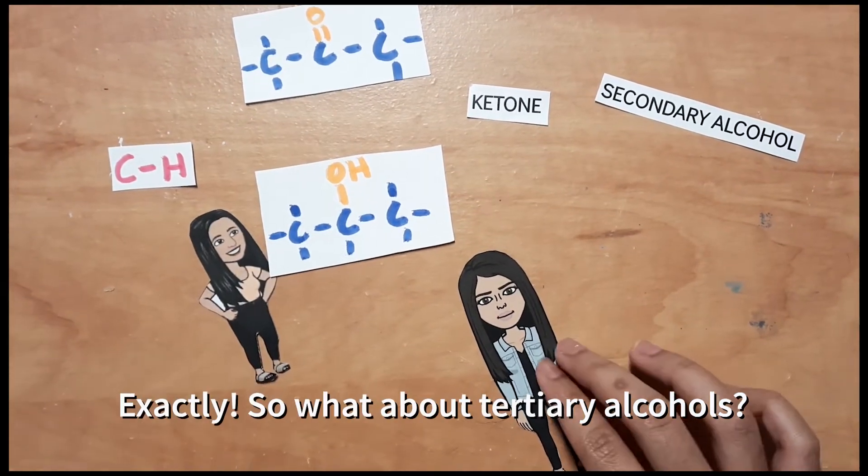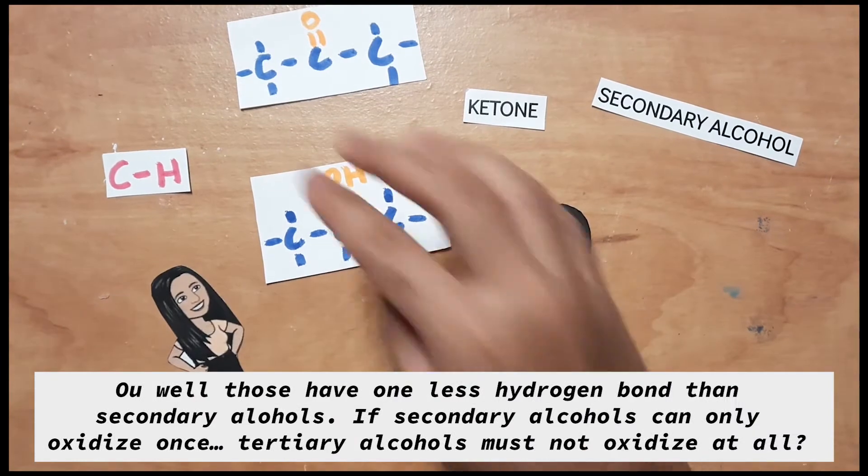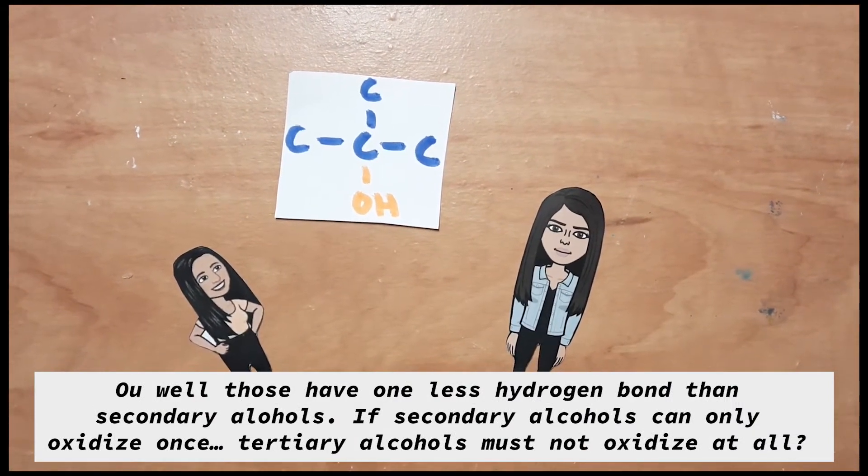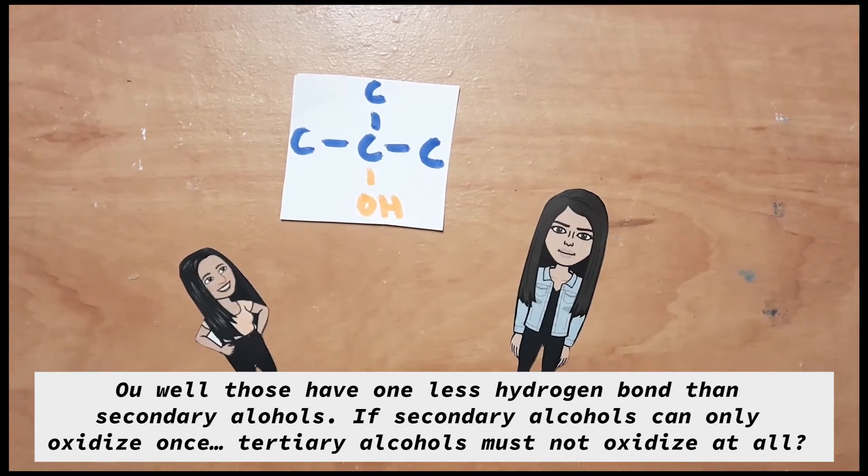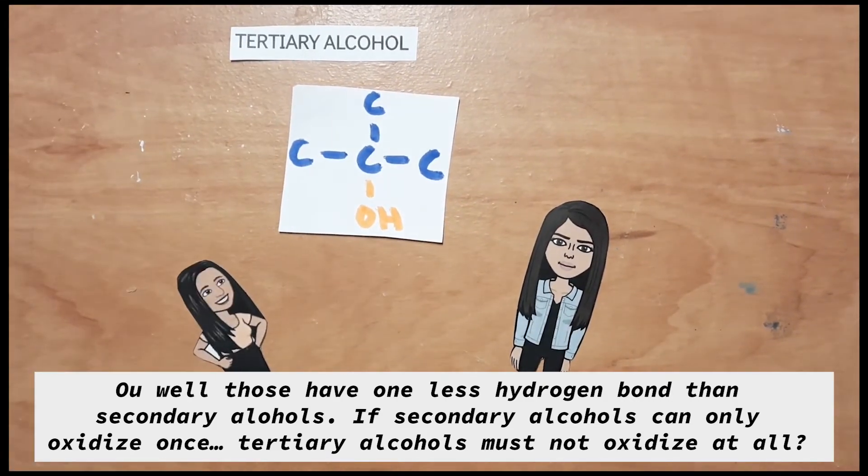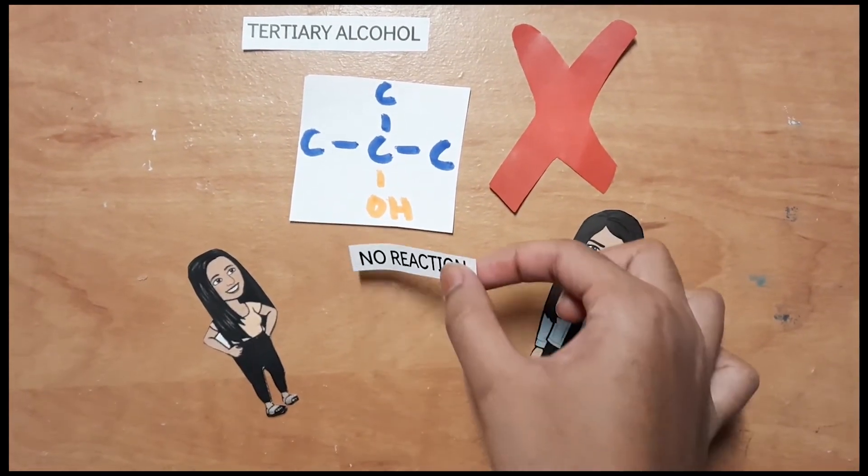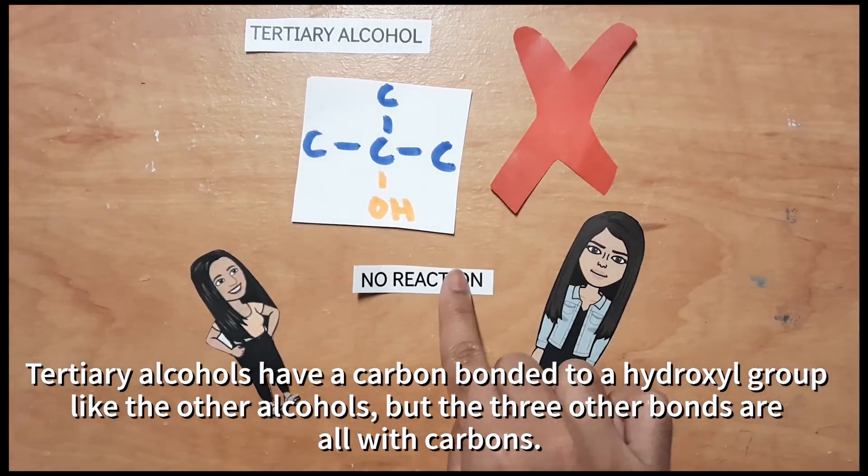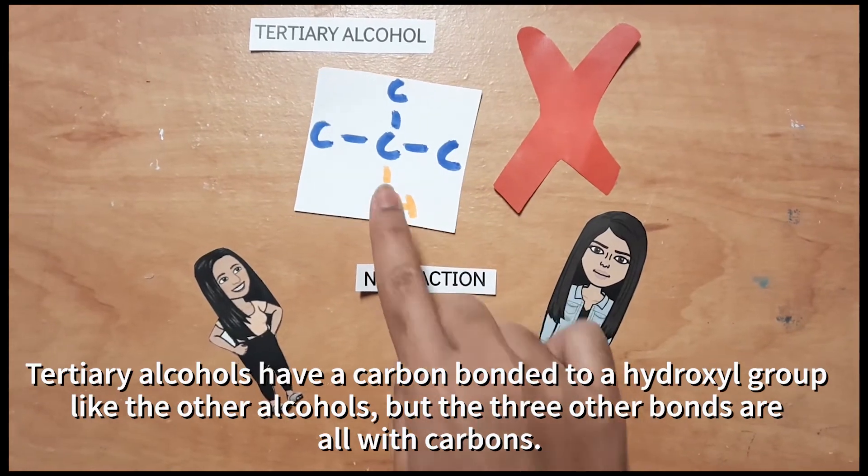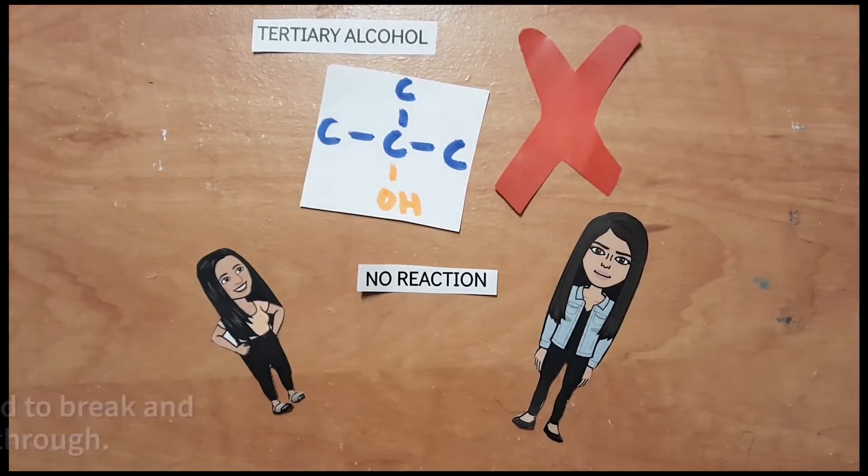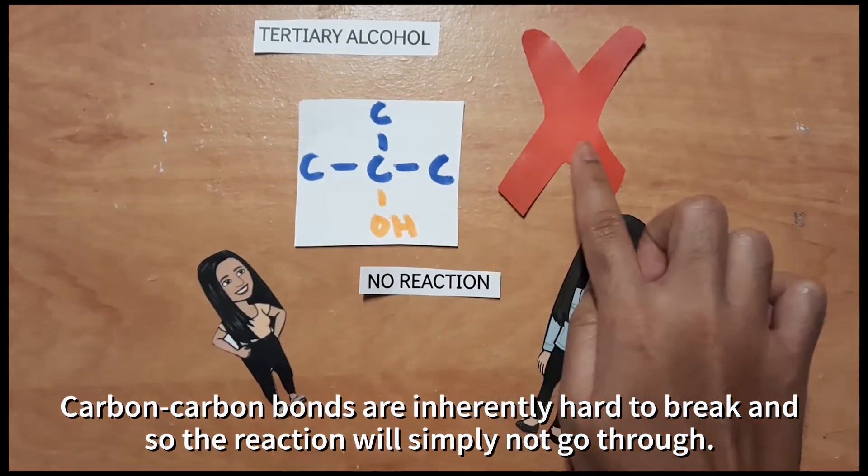Exactly. So, what about tertiary alcohols? Ooh, well, those have one less hydrogen bond than secondary alcohols. If secondary alcohols can only oxidize once, tertiary alcohols must not oxidize at all. Exactly, Yovina, you're getting it. Tertiary alcohols have a carbon bonded to a hydroxyl group, just like the other ones. But the three other bonds are all with carbons. Carbon-carbon bonds are inherently hard to break, and so the reaction will simply not go through.